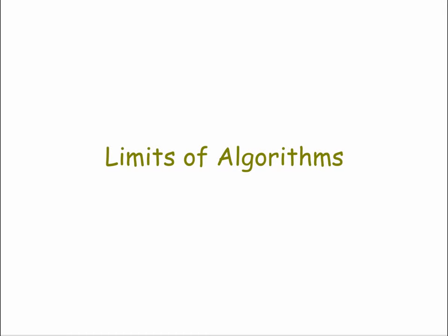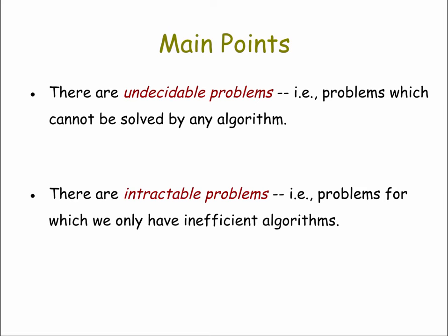In this lesson, we're going to explore some of the limits that algorithms have. We're going to look at two main types of limits. First, there are undecidable problems — problems for which no algorithm, in principle, can be created to solve the problem in all cases. The second type are so-called intractable problems: problems for which we have solutions for some cases, but in general the algorithms are too inefficient as the number of inputs grows large.